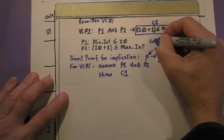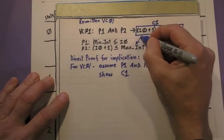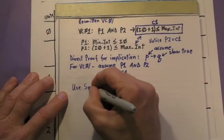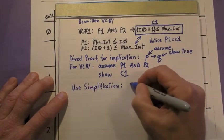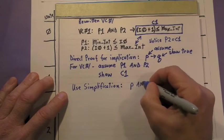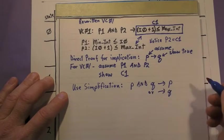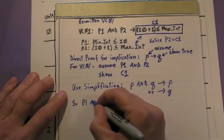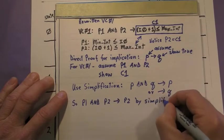In this proof, we notice that the premise P2 is equal to the conclusion C1. We're going to apply a rule of inference called simplification. When you know P and Q to be true, simplification allows you to utilize either one, P or Q. Applying simplification to the conjunction P1 and P2 allows us to utilize P2 in the next step.